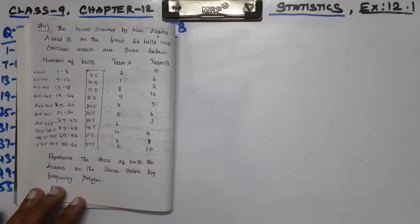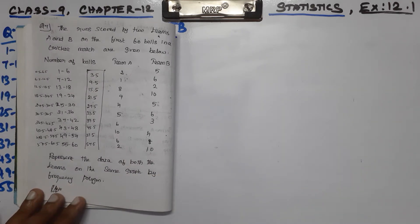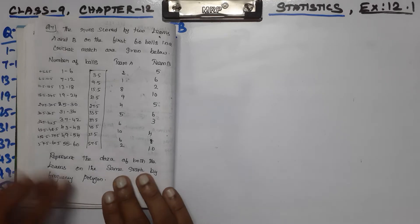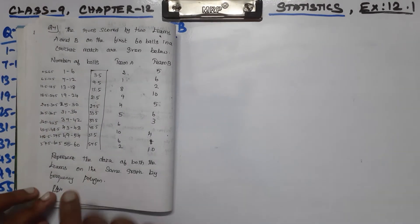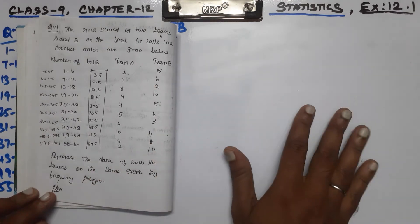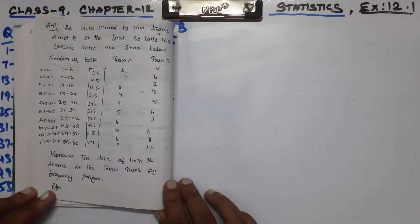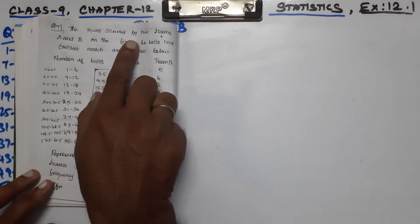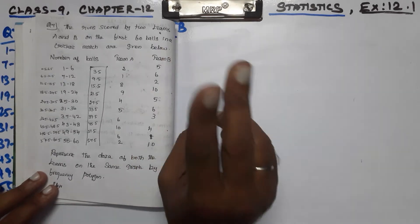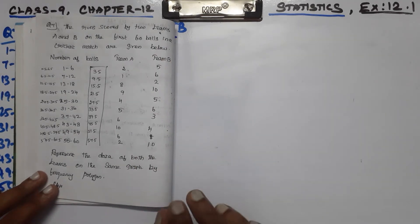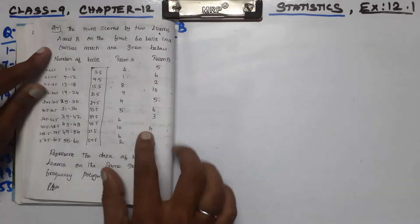Hello students, we are going to talk about this video in Class 9, Chapter 12, Statistics chapter exercise problems. So exercise number 7 — here we are going to talk about this. There are two cricket teams, and their scores in the first 60 balls are given as follows. This is a tabular format.